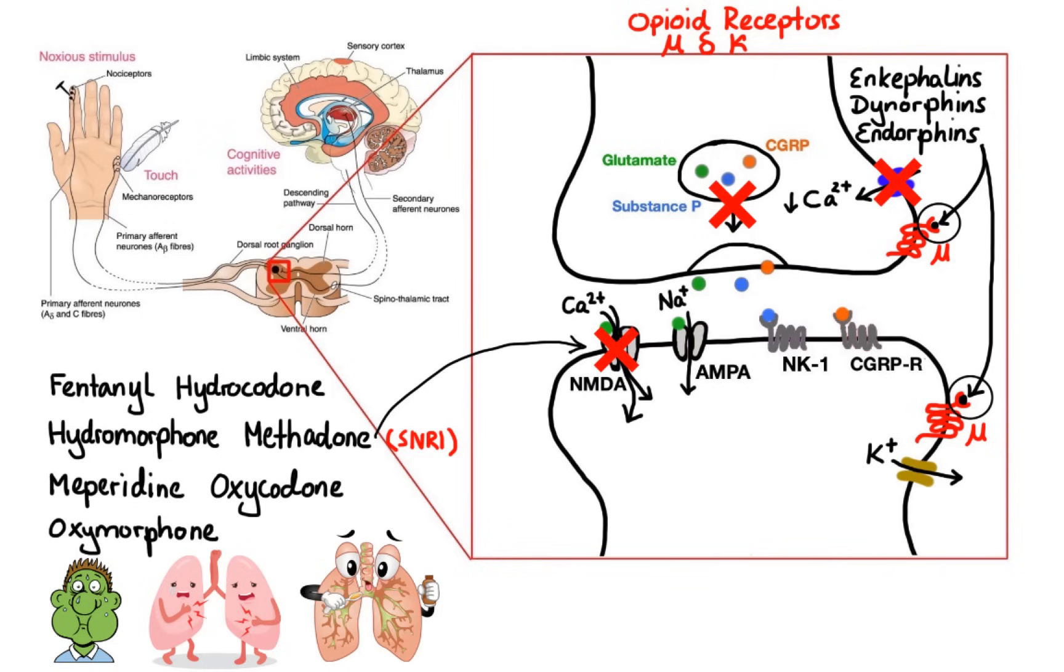In addition to that, opioids produce an antitussive effect by depressing the cough center in the medulla. Opioids are known to be associated with suppression of the immune system, as opioid receptors are involved with regulation of immunity. Morphine, as well as meperidine, may provoke release of histamine, which plays a major role in producing hypotension.